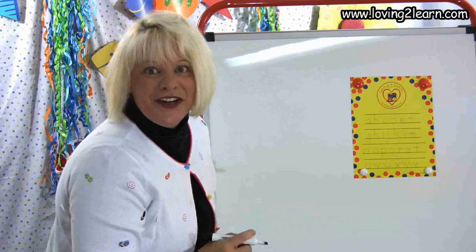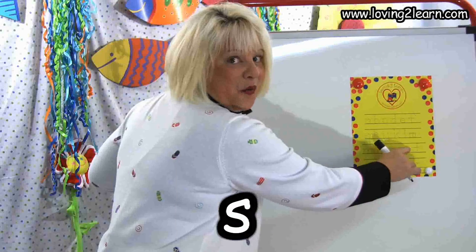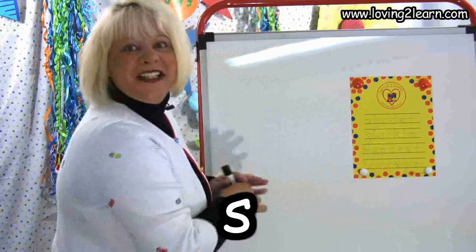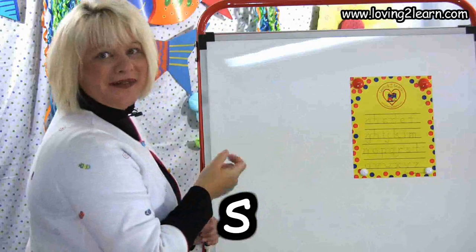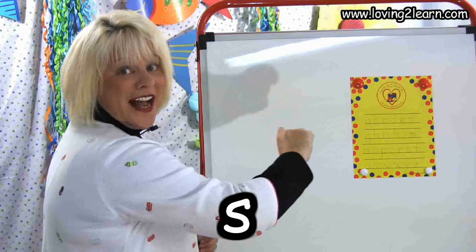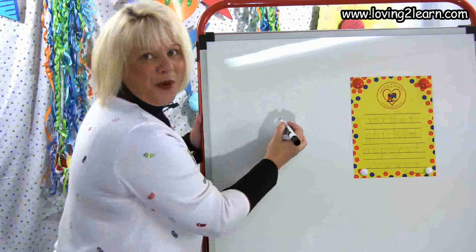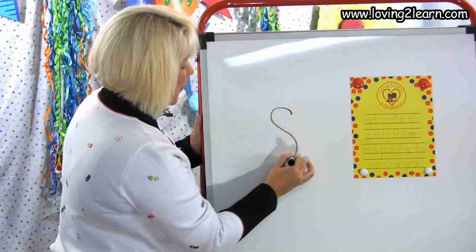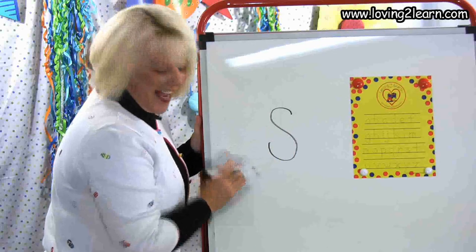The next letter is the letter S. S, we snake around the top and around the bottom. Let's do it in the air: snake around the top and around the bottom. We'll write it on the wipe-off board: snake around the top and around the bottom. There's the S.